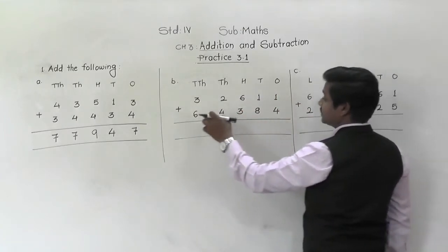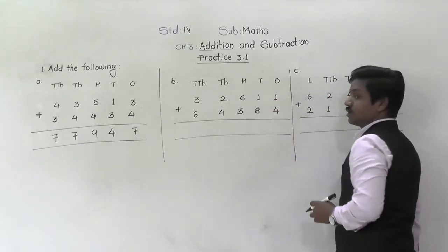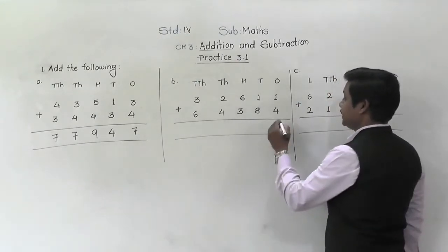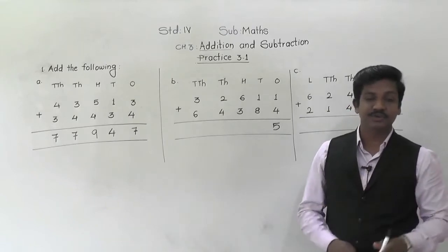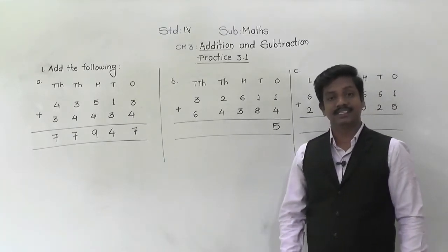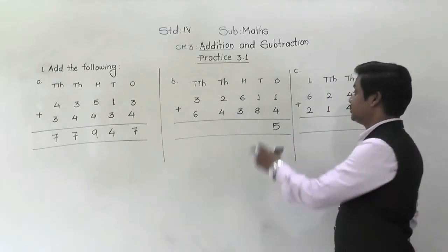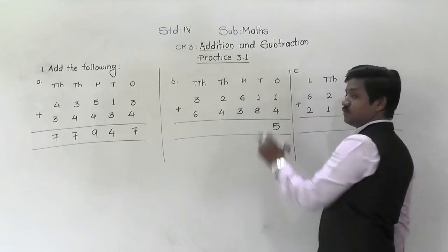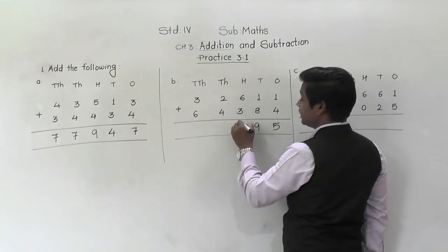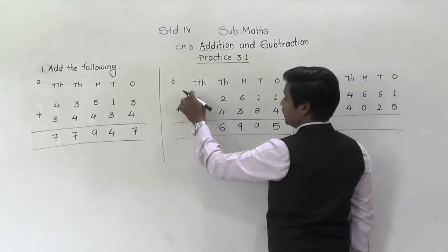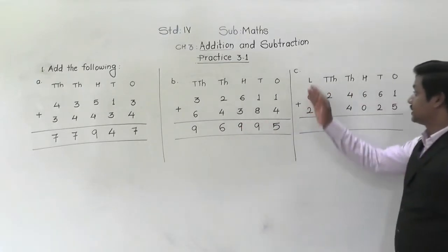Next: 32,611 plus 64,384. Starting with the ones place — one plus four is five. Now try to add in your mind; you have been using fingers to add, but now that you are in the next class, try to do the calculation in your mind. One plus four is five; eight plus one is nine; six plus three is nine; two plus four is six; six plus three is nine. So the sum is 96,995.